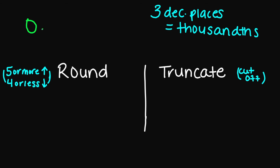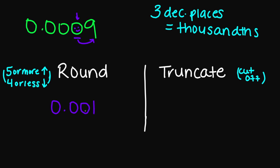Let's try 0.0009. Three decimal places puts me right here at the 0. If I look next door, I have a 9, which is greater than 5, so I need to round up. My rounded answer is 0.001. And if I had to truncate, I cut it off right here, so the truncated answer would be 0.000.